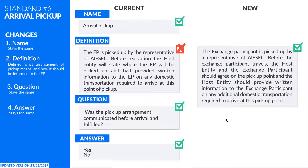The exchange participant is picked up by a representative of ISX. This will not change. Before the exchange participant travels, the host entity and the exchange participant should agree on the pick up point, and the host entity should provide agreed information to the exchange participant on any additional domestic transportation required to arrive to this pick up point. So ISX in host agrees with the EP and then they send information on how to arrive to this pick up point.